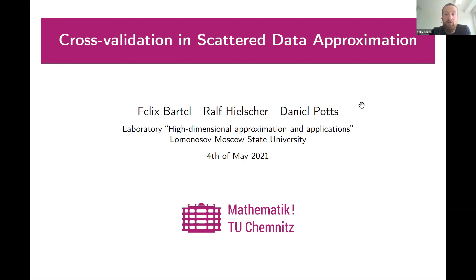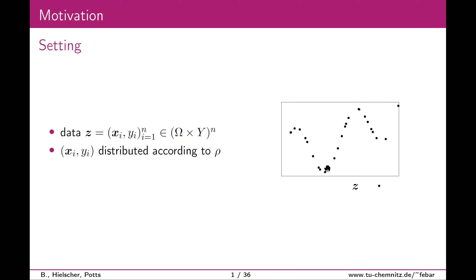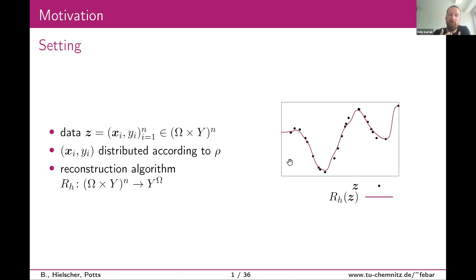Thanks for organizing this event and for the introduction. I want to talk about cross-validation. To introduce this concept, let me start with the setting: a typical learning scenario where we have n samples x from some spatial domain omega and data y. You can imagine having some unit interval with samples coming from a function. Various methods take these samples and try to reconstruct the underlying function, but we're concerned with how good this reconstruction is.